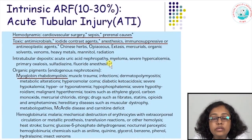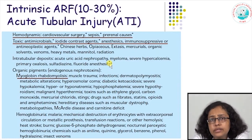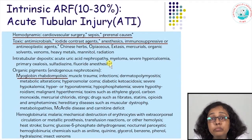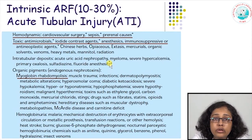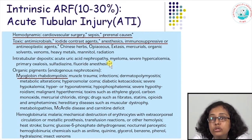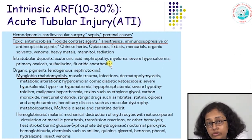Intrinsic acute renal failure involves actual injury to kidney tissue, seen in 10 to 30 percent of cases. The commonest is acute tubular injury, where the renal tubules are injured. Any pre-renal cause decreasing blood supply to the kidneys, if not intervened at the proper time, can cause tubular injury. So all causes of pre-renal AKI can also cause acute tubular injury — it is a continuous spectrum if not intervened at the appropriate time.